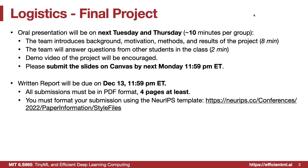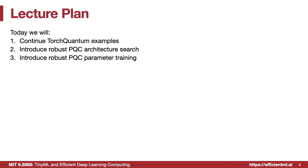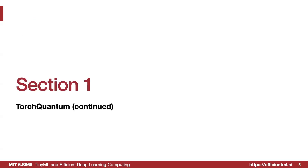Let's get started. Today I will introduce three aspects. First is continued TorchQuantum usage and examples. Second is to continue our previous lecture's parameterized quantum circuit architecture search and parameter training. Our focus is on how to make these more noise robust. The first section is on TorchQuantum continued.